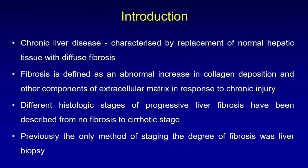Chronic liver disease is characterized by replacement of normal hepatic tissue with diffuse fibrosis. Fibrosis is defined as an abnormal increase in collagen deposition and other components of extracellular matrix in response to chronic injury. Different histological stages of progressive liver fibrosis have been described, from no fibrosis to cirrhotic stage. Previously, the only method of staging the degree of fibrosis was liver biopsy.